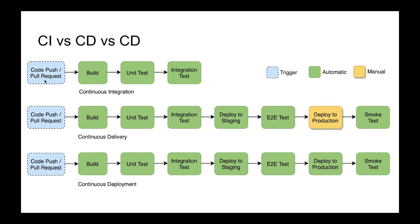In continuous integration we have a code push or pull request as our trigger, and we run these pipelines. The next one is continuous delivery — it's the next step. It extends our continuous integration with a few new steps: it deploys to staging, a test environment which should be as similar as possible to our production environment.